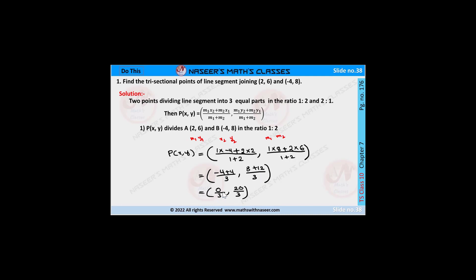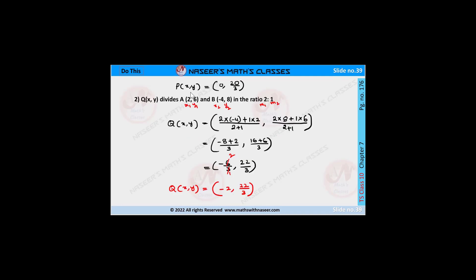We can write 0/3 and 20/3. Therefore P(X, Y) = (0, 20/3) is the first trisectional point, which divides the given line segment in the ratio 1:2.